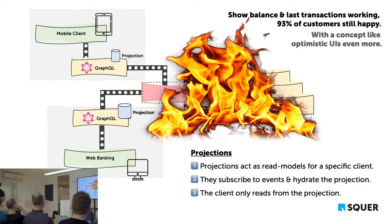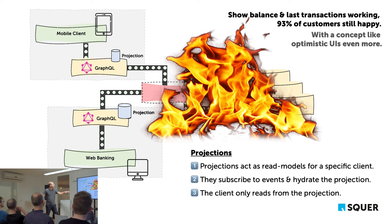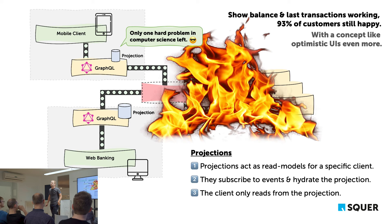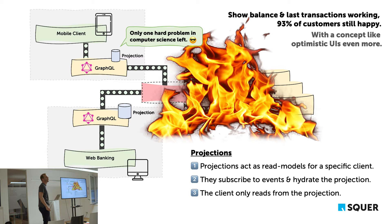An audience member raises a question about cache consistency. The speaker notes: with a push-based architecture you don't have cache invalidation issues anymore because changes are pushed to you — you never ask for changes.